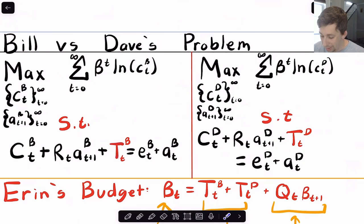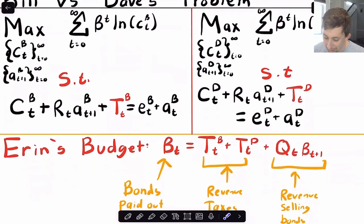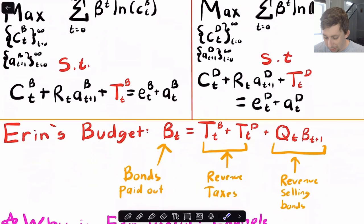Now, on the other hand, Dave's problem is also going to look almost exactly the same. Just with those taxes, still choosing consumption and assets. But now we have a third player. And our third player is Erin. Erin, we're going to say, doesn't really have an objective.